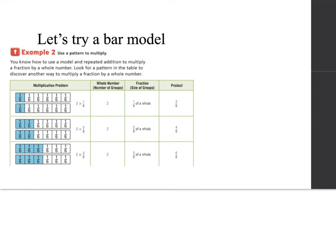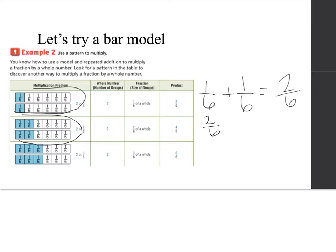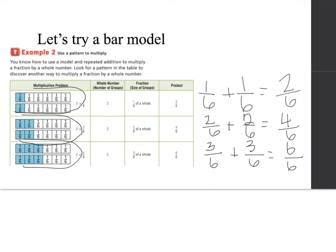So we can also use a pattern to multiply. In the first model up top here, we have two groups of one-sixth. So if we use repeated addition, we could do one-sixth plus one-sixth to give us two-sixths. Same thing for the second model — if we show two groups of two-sixths, we could again use repeated addition and show two-sixths plus two-sixths for a total of four-sixths. And the same thing for the third: we could show two groups of three-sixths, and again using repeated addition, three-sixths plus three-sixths for a total of six-sixths, or one whole.